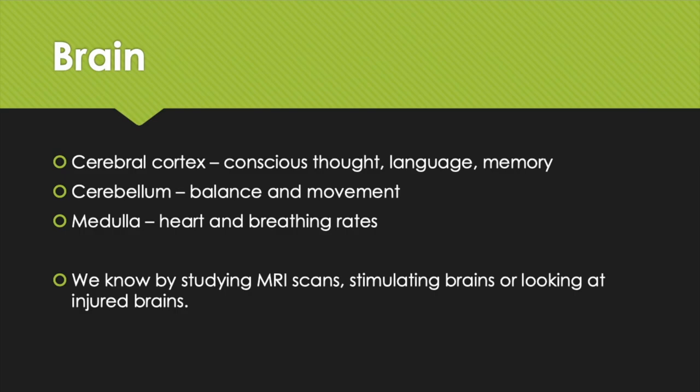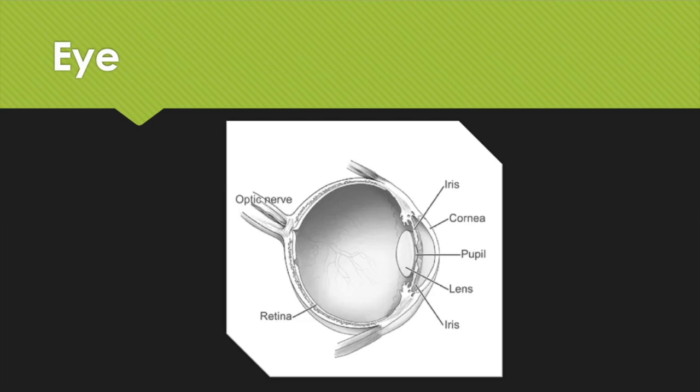This is the eye. You need to know about various parts: the sclera, which is the white part of your eye that protects it; the iris, which is the colored part that controls the amount of light entering and leaving the eye; and the retina, which contains the light-sensitive cells and is at the back of the eye.